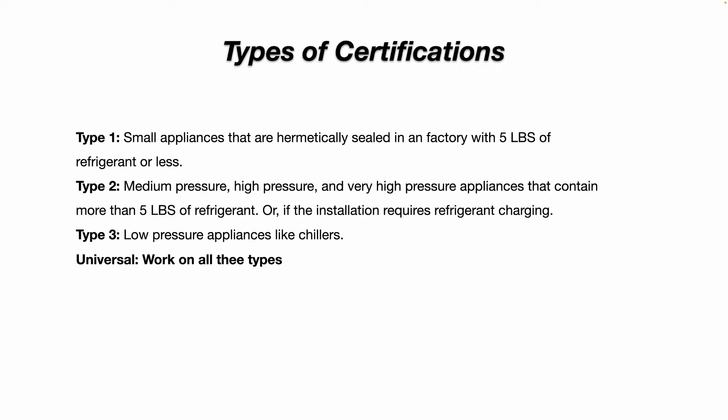The types of certifications are: Type 1 for small appliances that are hermetically sealed in a factory with five pounds of refrigerant or less — think refrigerators, window air conditioners, drinking fountains. Type 2 covers medium pressure, high pressure, and very high pressure appliances that contain more than five pounds of refrigerant, or if the installation requires refrigerant charging.